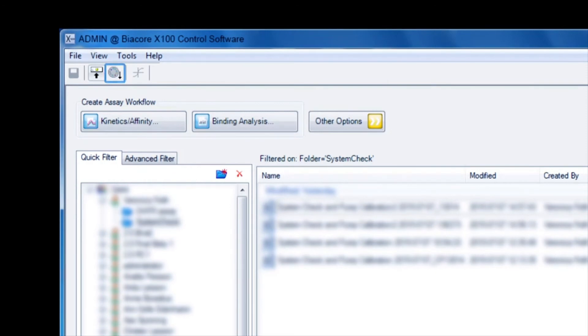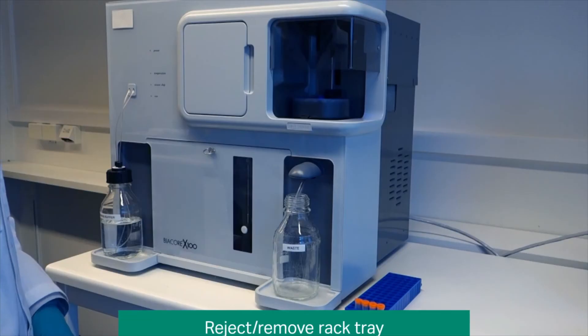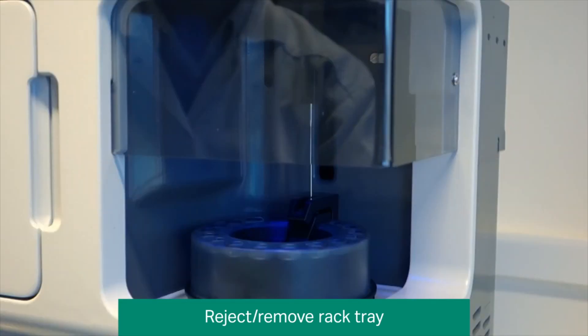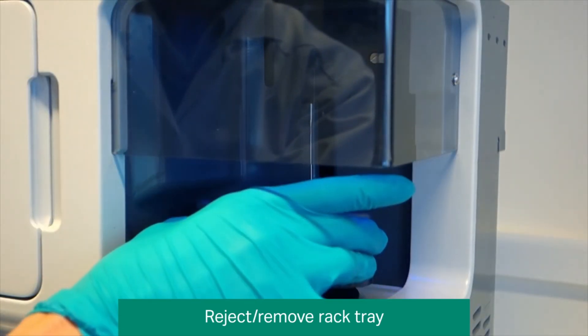Click the Load Samples icon in the Beacore X100 control software. Wait until the lamp rack lock is switched off, then lift off the reagent rack.